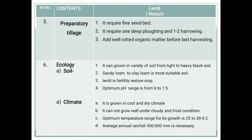Regarding preparatory tillage operations: lentil resembles gram in plant habit and cultivation requirements. Land preparation is not very intensive — one plowing followed by one or two harrowing is necessary to prepare a fine seed bed. At last, add well-rotted organic manure before the last harrowing.